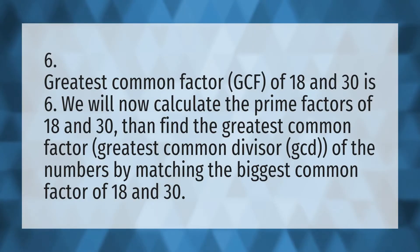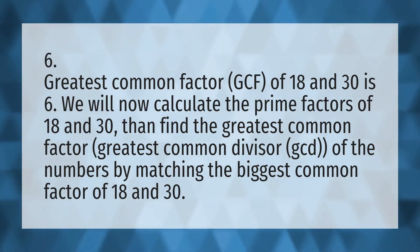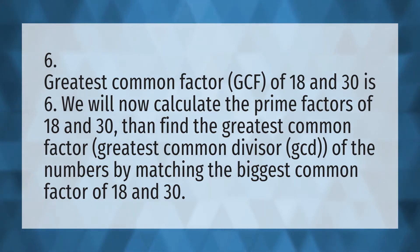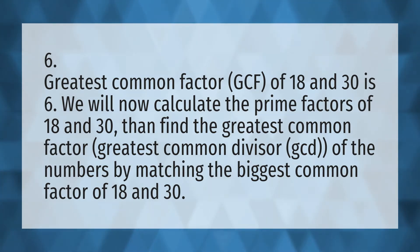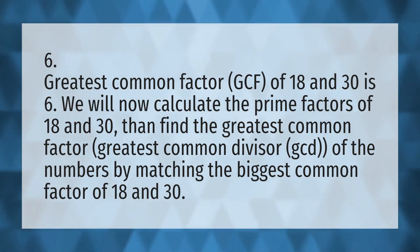The greatest common factor (GCF) of 18 and 30 is 6. We will now calculate the prime factors of 18 and 30, then find the greatest common factor — greatest common divisor (GCD) — of the numbers by matching the biggest common factor.